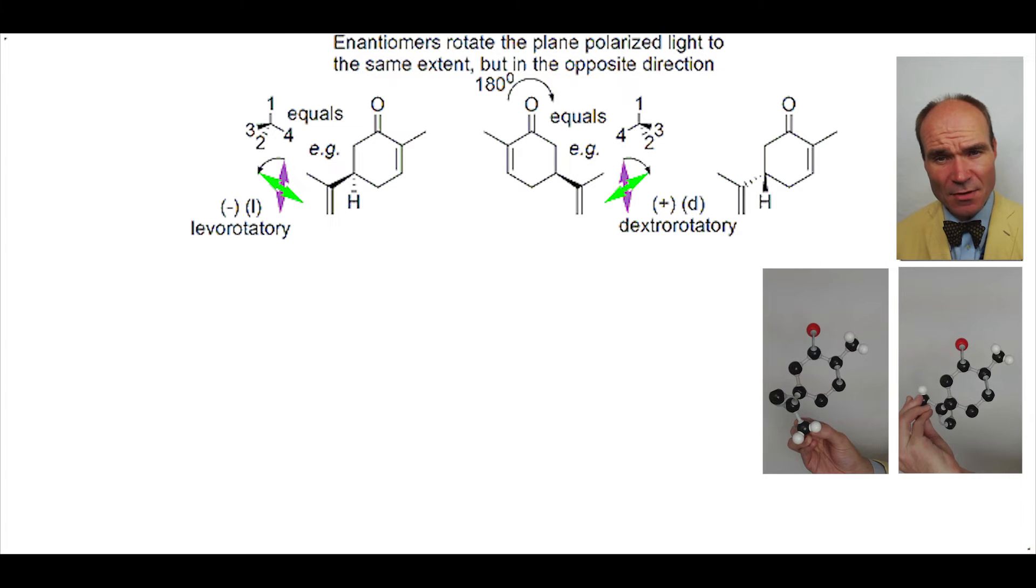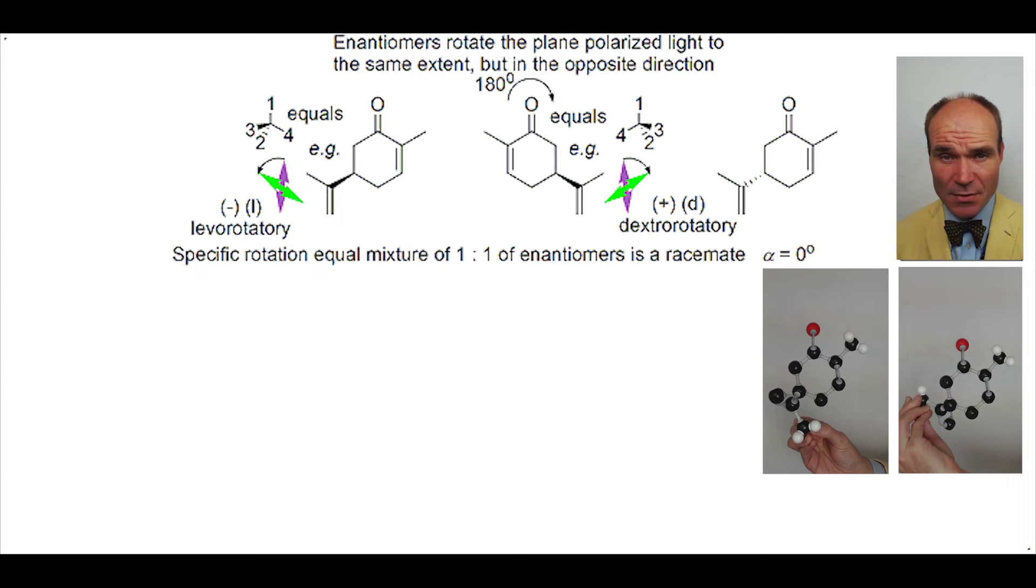As the enantiomers rotate the light the same amount in opposite directions, if there are equal amounts of both enantiomers, that's to say a racemate, their ability to rotate light cancels each other out to give zero rotation.